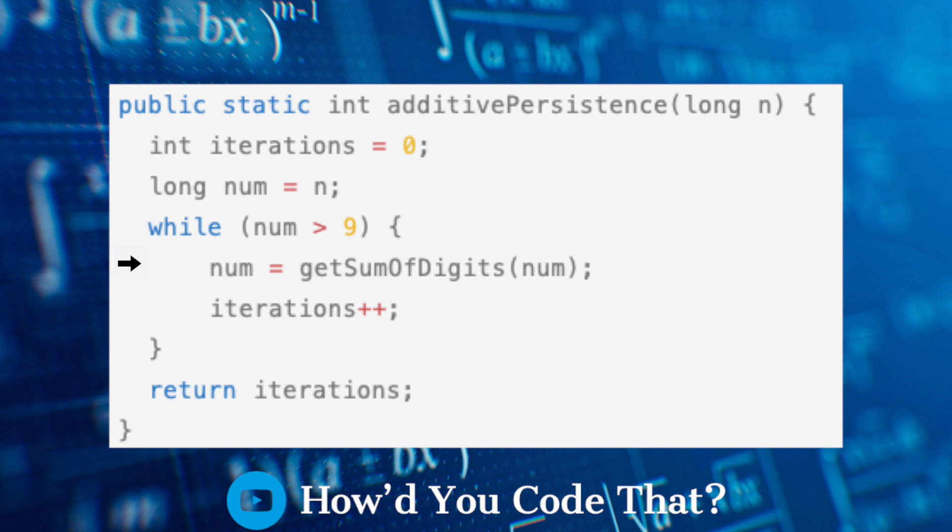While num is greater than 9, the helper method getSumOfDigits is called, which performs the necessary calculations to sum all integers in the number it receives.